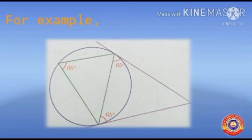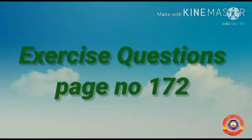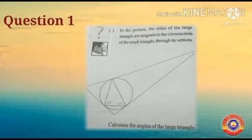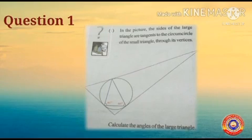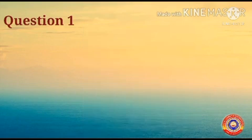For example, the angle formed from the chord to the same part of the circle is equal to 65 degrees, so the angle between chord and tangent is also equal to 65 degrees. Next, let's go through exercise question 1 on page 172 in your textbook. The sides of the large triangle are tangents to the circumcircle of the small triangle through its vertices. We have to calculate the angles of the large triangle.